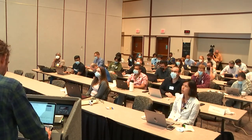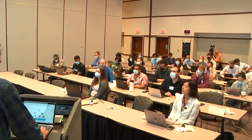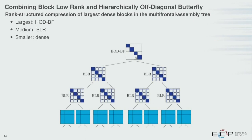A question about error propagation in the hierarchical tree: yes, if you have low-rank approximations at one level, errors propagate throughout the tree. There is some analysis on this, for instance by Jianlin Xia from Purdue University. When doing hierarchical matrix compressions, we typically set a smaller compression tolerance at lower levels because we know errors accumulate as you go up in the tree, so we take that into account.